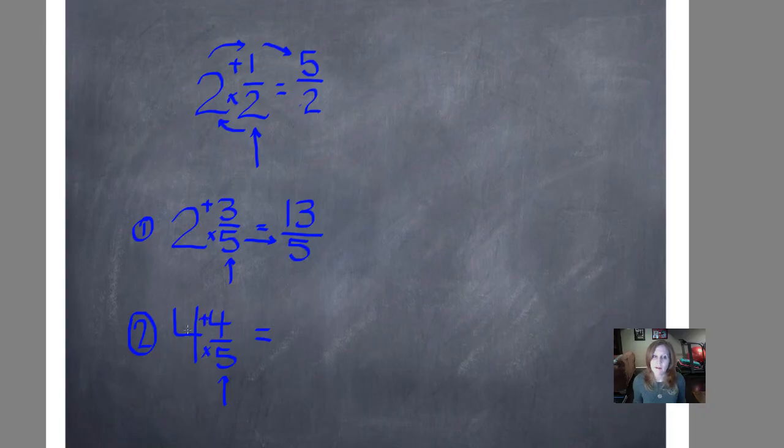Add our numerator. Twenty plus four is twenty-four. Write it as our new numerator, and then our denominator stays the same. Twenty-four-fifths. That's the improper fraction for four and four-fifths.